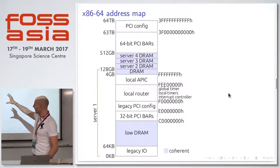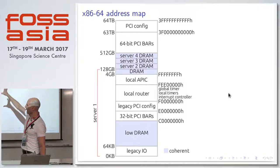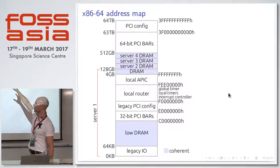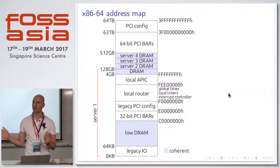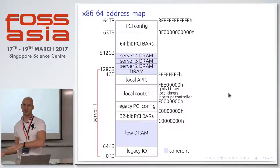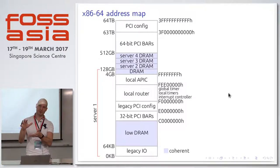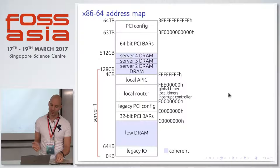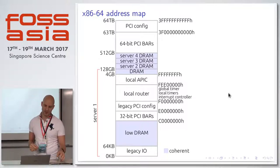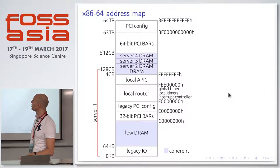The DRAM areas are all cache-coherent, mapped into PCI BARs distributed across different servers. When firmware is configuring this — booting your rack of servers into one system — it maps all of the DRAM of different servers into one global address space. Linux supports 32 terabytes for coherent memory and 64 terabytes for non-coherent.